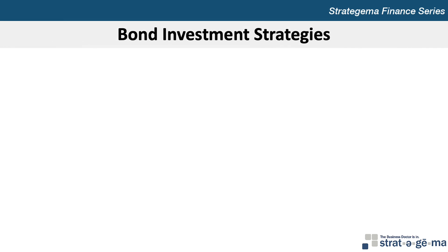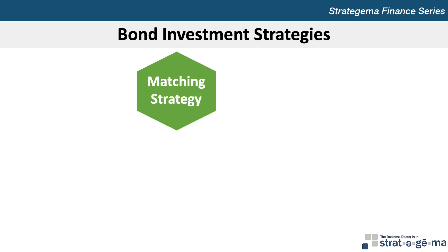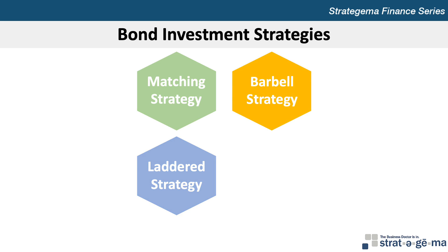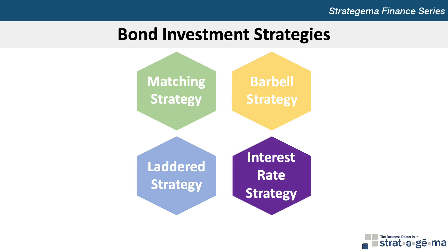The fourth key concept relates to bond investment strategies. Many investors value bonds and assess their risk when managing investments. There are four main strategies: a matching strategy, where investors create a bond portfolio to generate periodic income matching their expected periodic expenses; a laddered strategy, where funds are evenly allocated to bonds across several different maturity classes; a barbell strategy, where funds are allocated to both short-term and long-term maturity bonds; and an interest rate strategy, where funds are allocated to capitalize on interest rate forecasts.